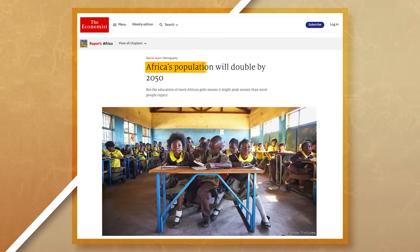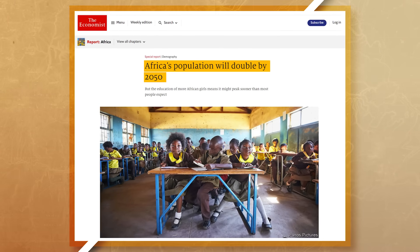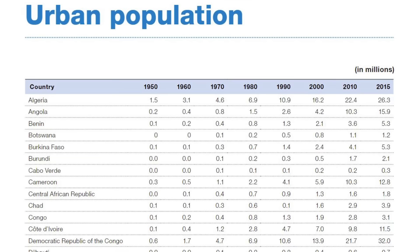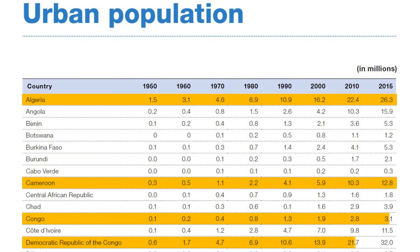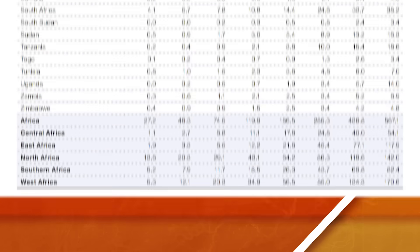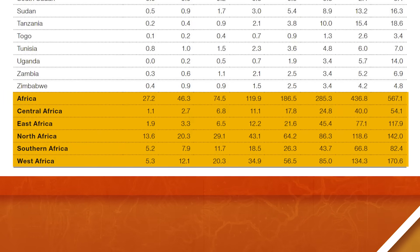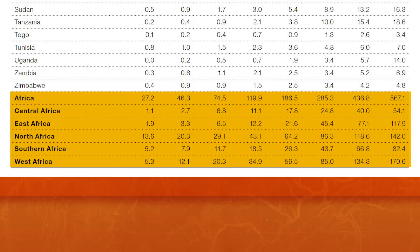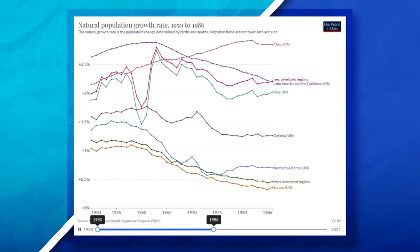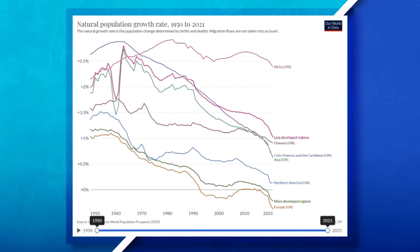Africa, for example, is expected to double its population by 2050 and has one of the fastest urban growth rates in the world, which we can see when looking at the urban population of different African countries from 1950 to 2015. Almost every country has constant urban growth. Every region in Africa is experiencing continued urban growth, while at the same time birth rates are declining in core countries, with more people looking to live in suburbs and edge cities instead of densely populated areas.